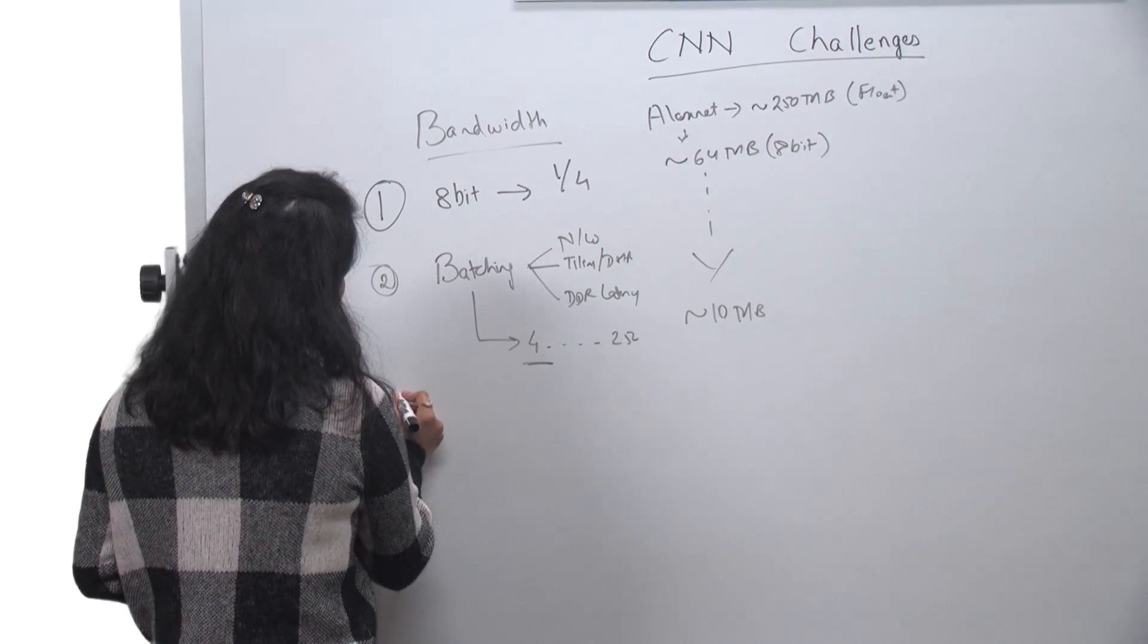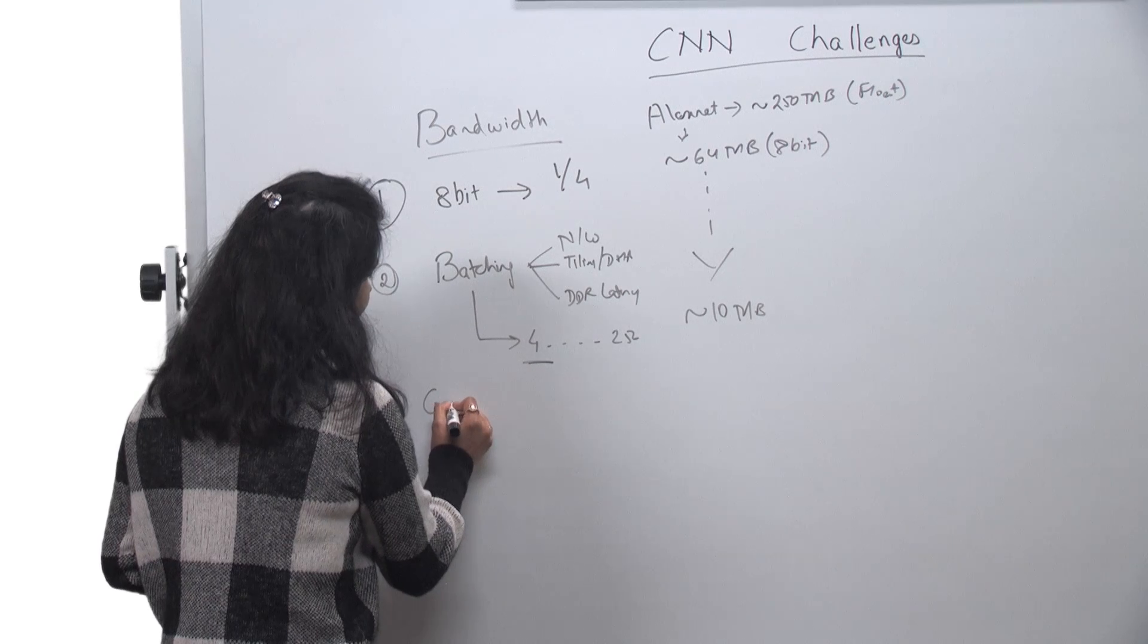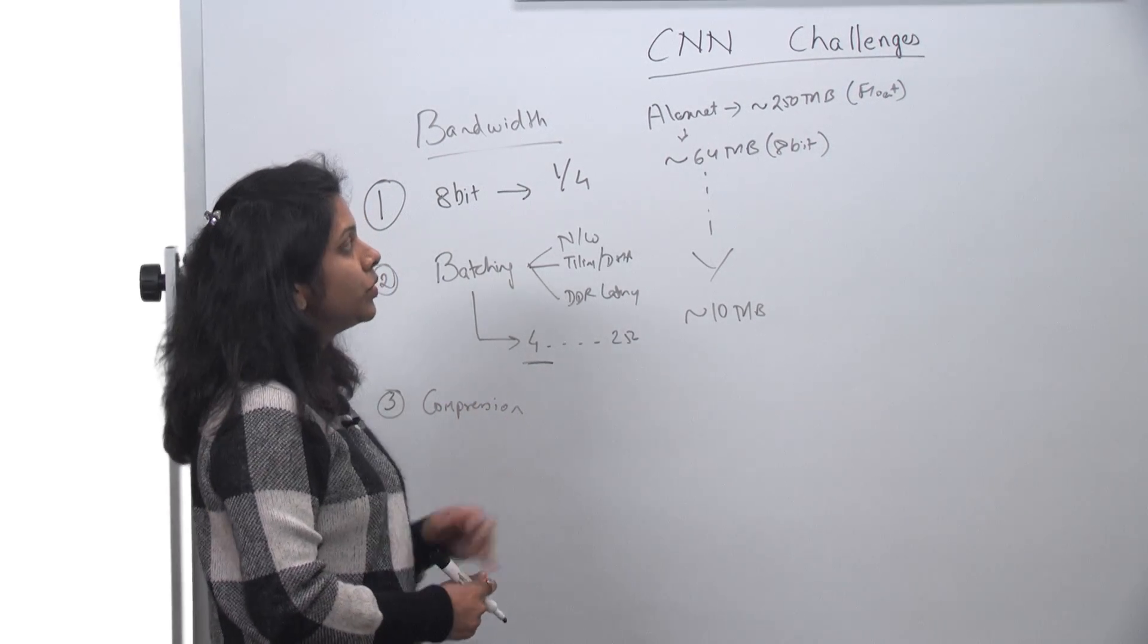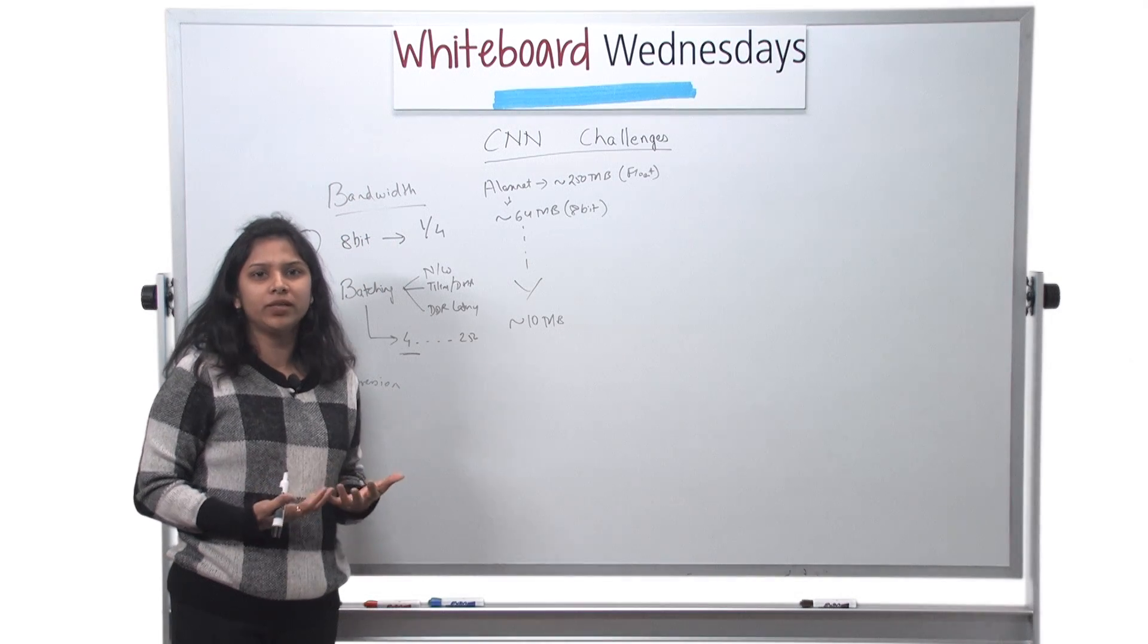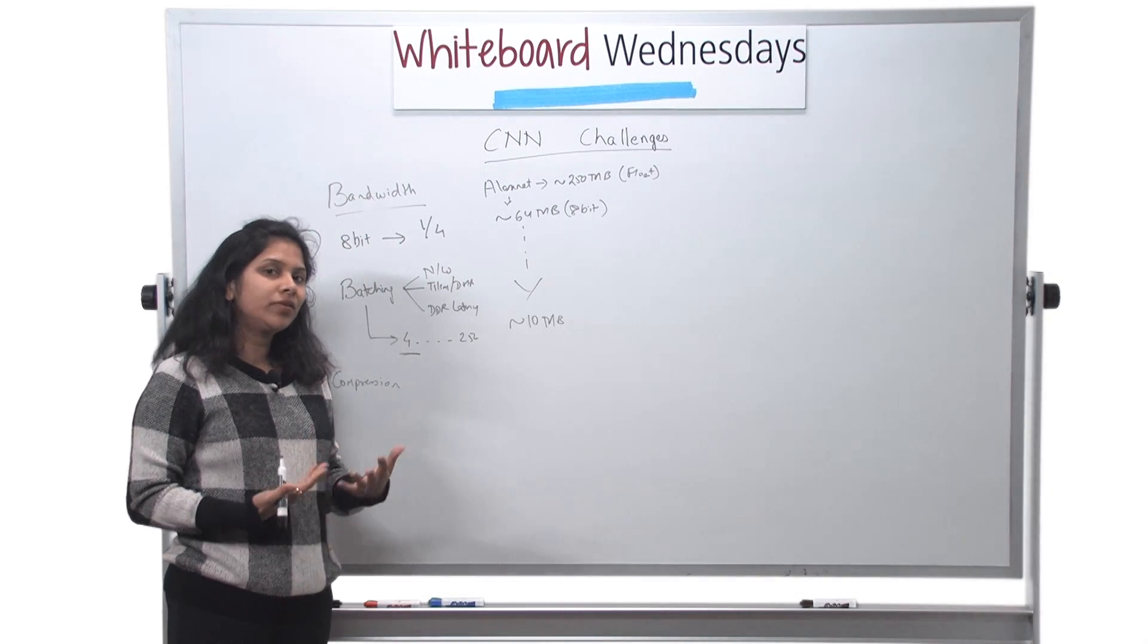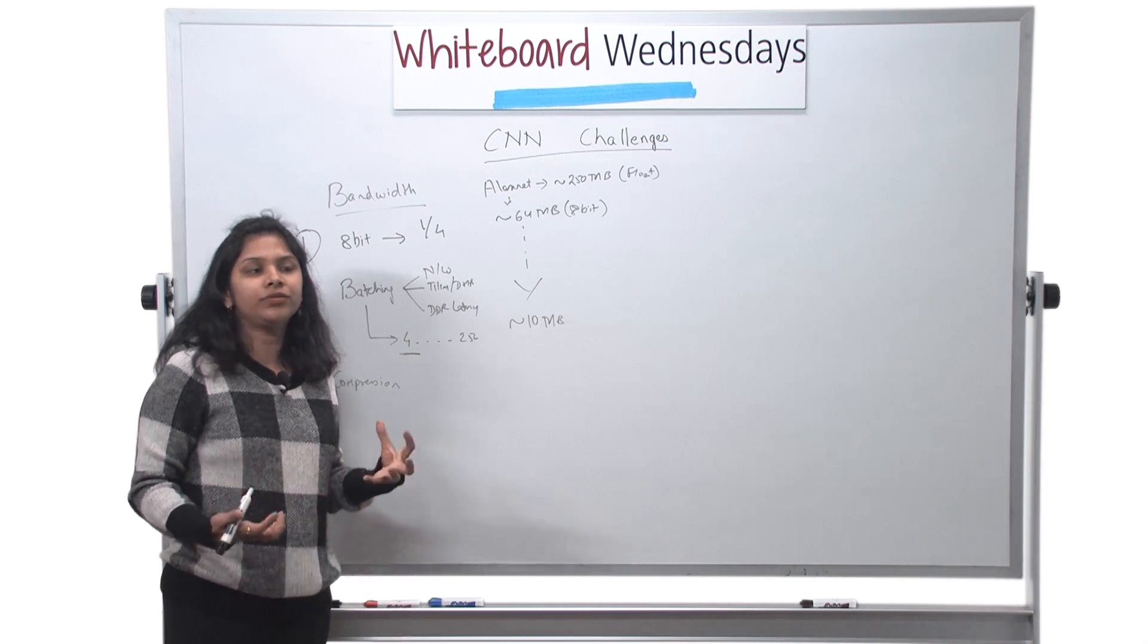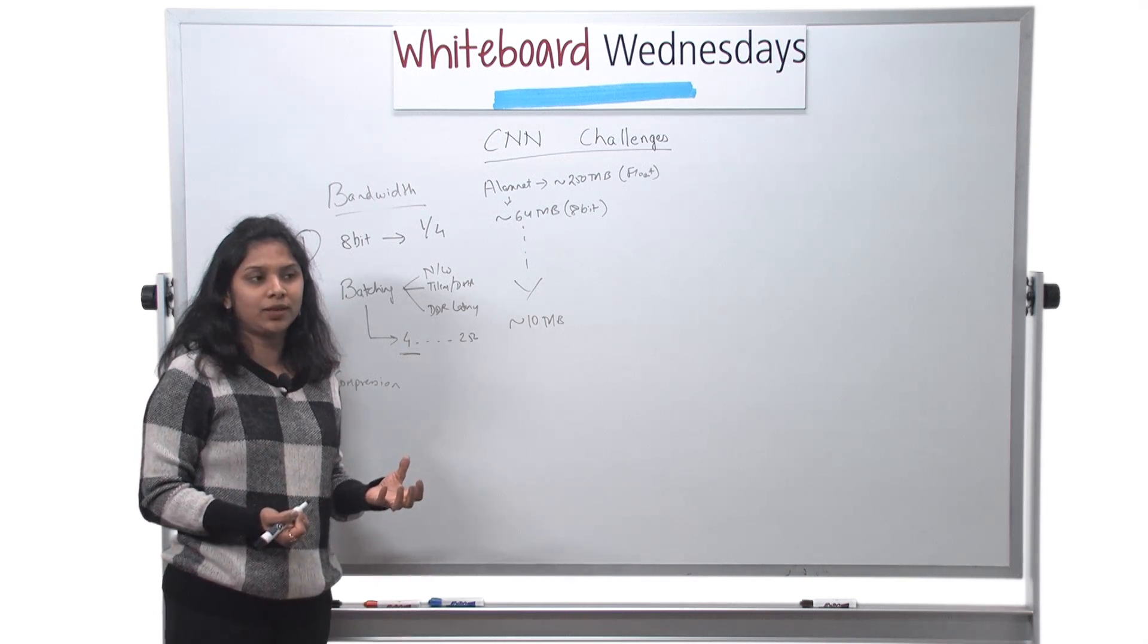The third thing could be compression, data compression. So we have seen most of these networks have a lot of redundancy into them. So these networks can be retrained in a way that you can create a lot of zeros present in the coefficient data.